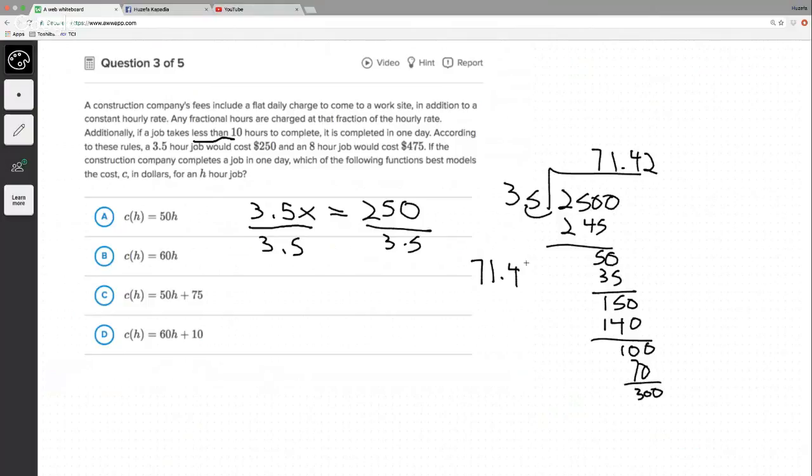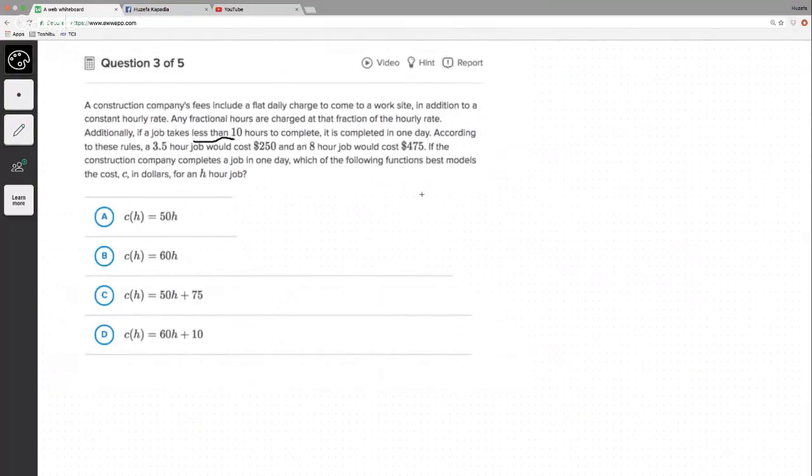Oh wait, did I do that right? 3.5, oh wait, wait, wait, sorry, there's a, I messed up. Let me rewind. I forgot there's a flat fee, this is a system of equations, my bad. So it's like this, 3.5x plus y equals 250, 8x plus y equals 475.